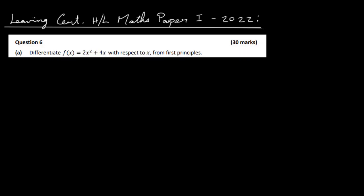Let's have a look at the Leaving Cert Higher Level Maths Paper 1 for 2022, and this is question 6. The first question involves differentiation from first principles. We have this function here, 2x squared plus 4x, and we've just got to differentiate it from first principles.